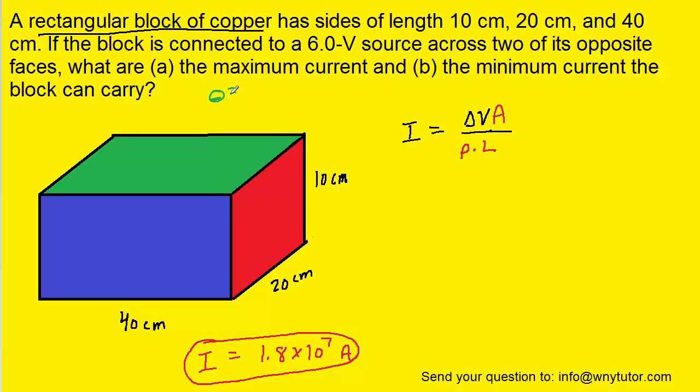For the green surface we would imagine that we are kind of looking down through the rectangular block. Now the delta V will still be 6 volts. That hasn't changed. The area will change though because now we need the area of the top of this rectangular block. And hopefully we can see that this right here is 40 centimeters and this way here is 20 centimeters. So the area would be 0.4 meters times 0.2 meters.